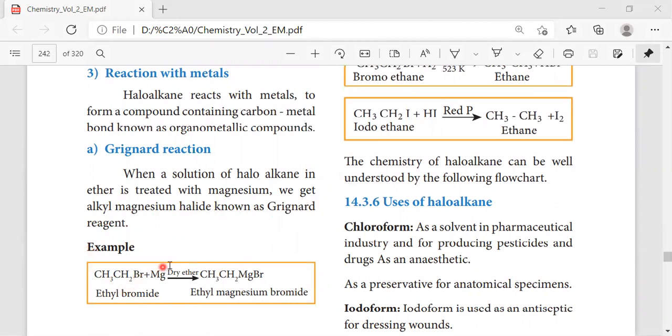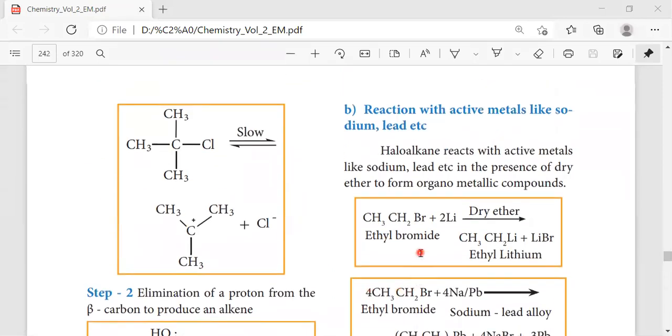The Grignard reagent is formed by the reaction of alkyl halide with magnesium in the presence of dry ether. We get the product as alkyl magnesium halide. Simply, ethyl magnesium bromide is formed as a product.